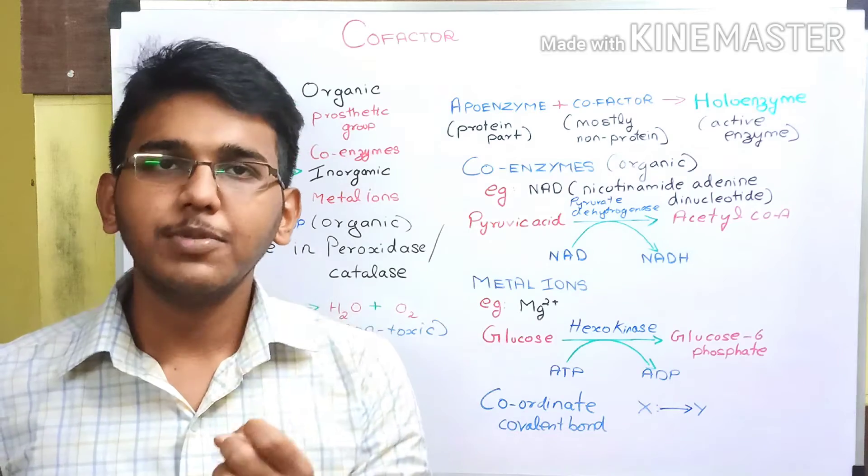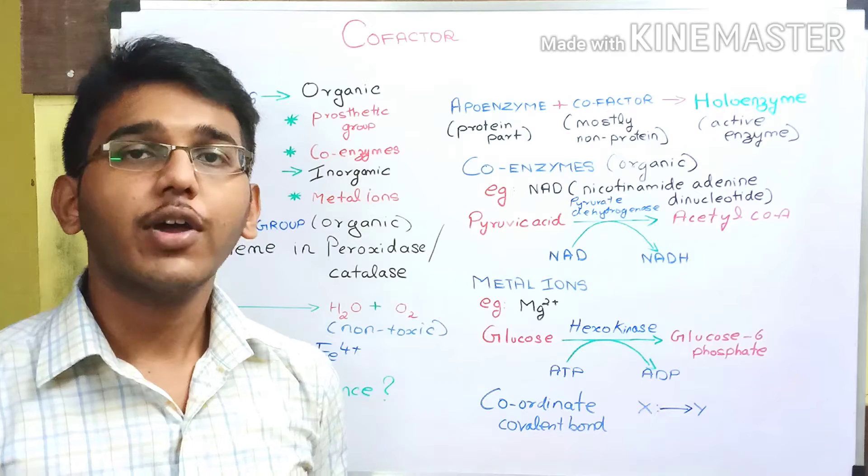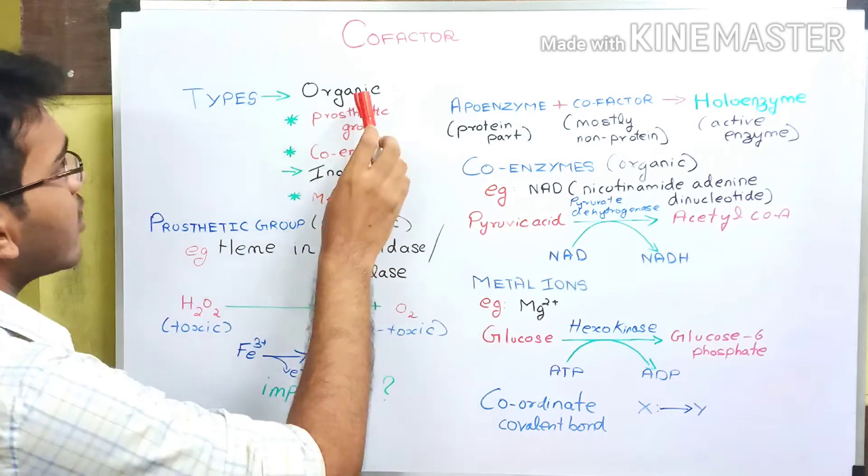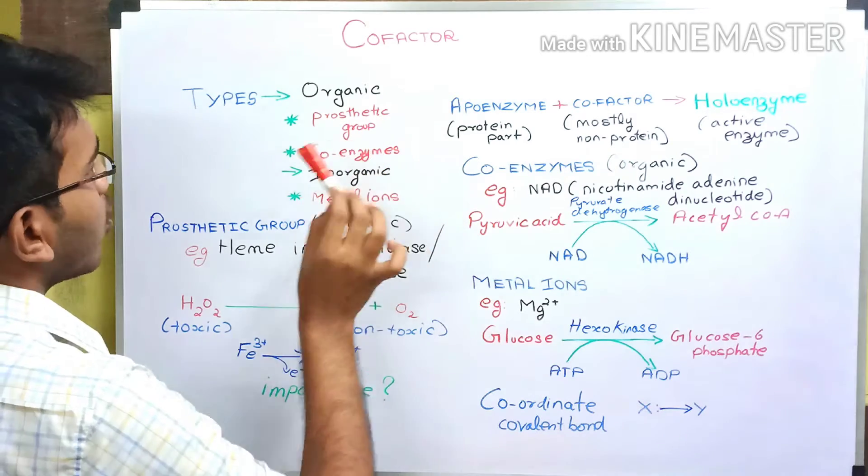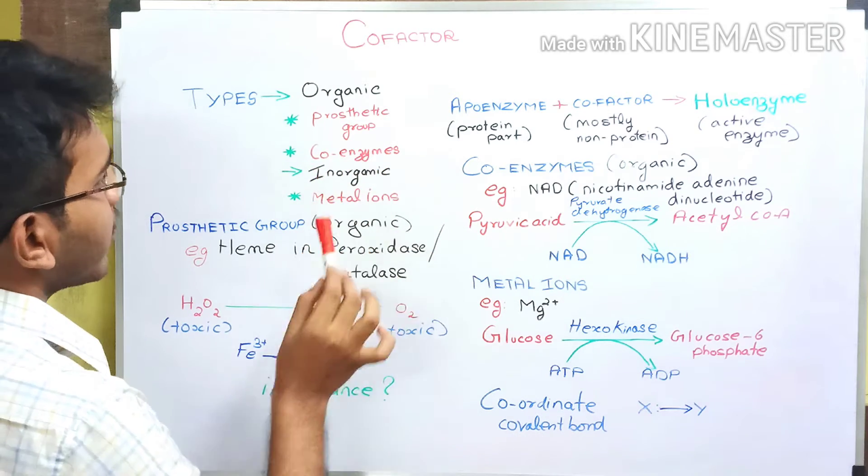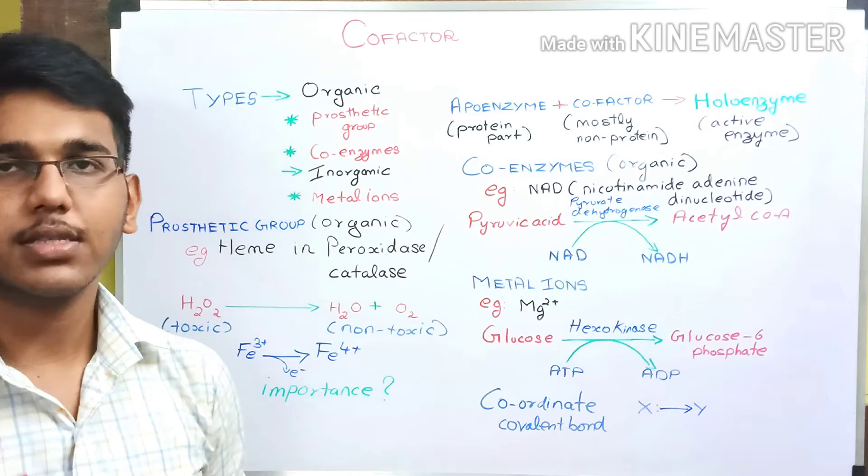Let us discuss the types and examples of those types. The cofactor is of two types: organic cofactor and inorganic cofactor. The organic cofactors are prosthetic group and coenzymes, and the inorganic group of cofactors is the metal ions. First of all, let us discuss about the prosthetic group.